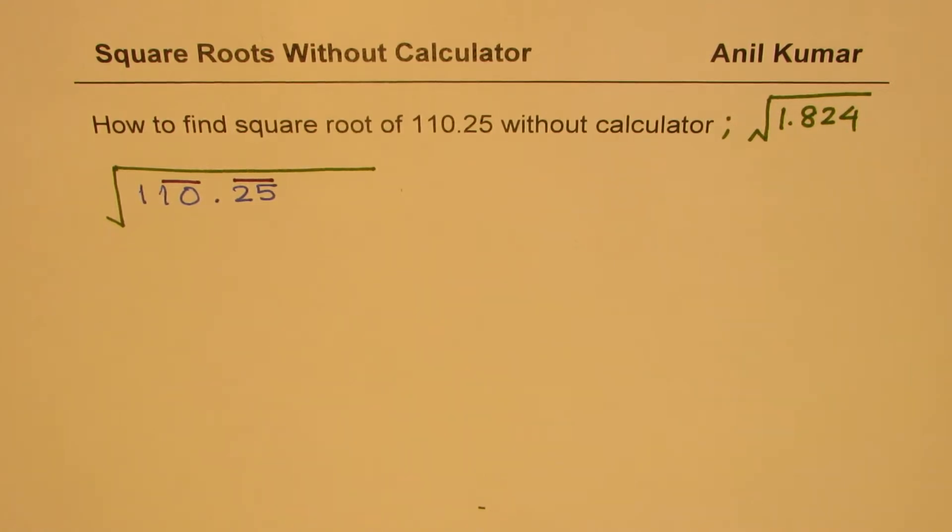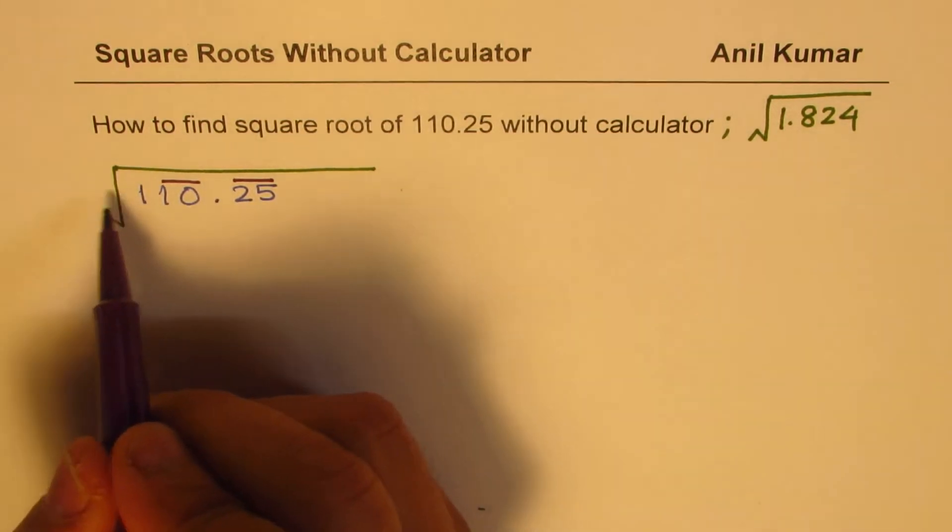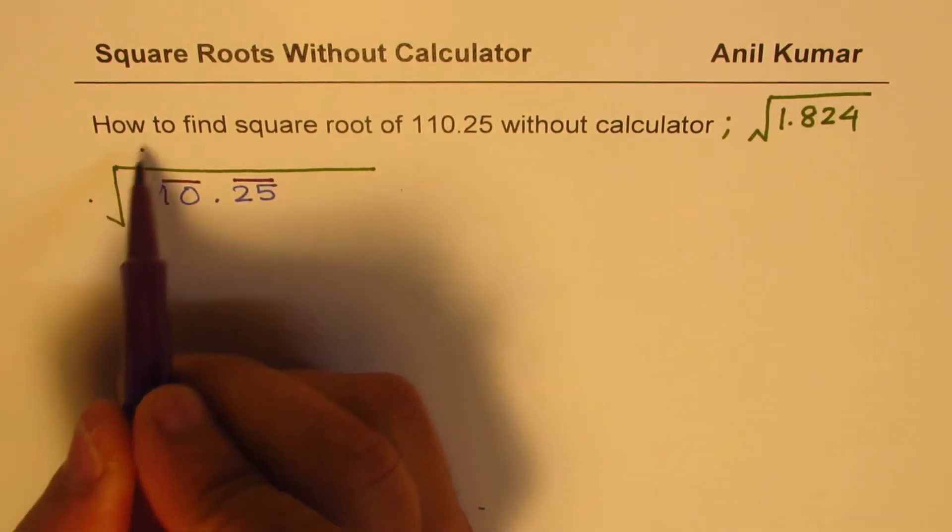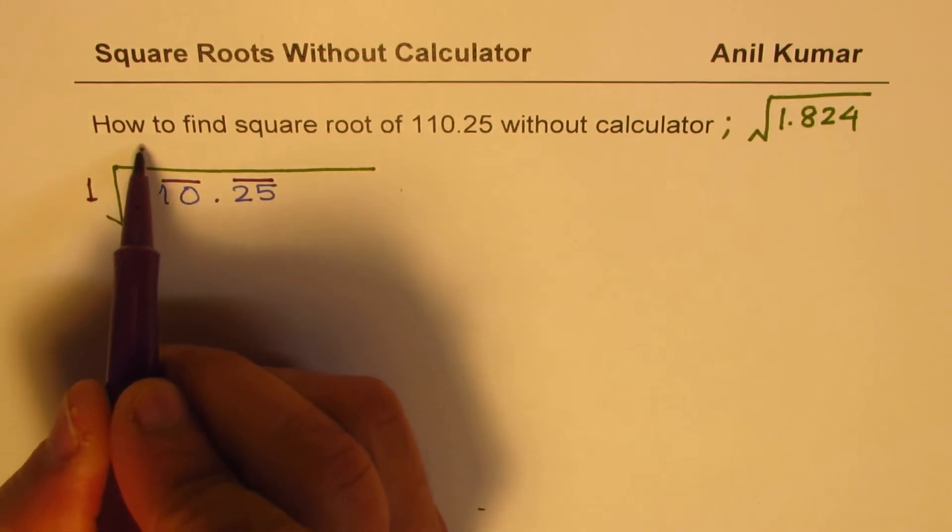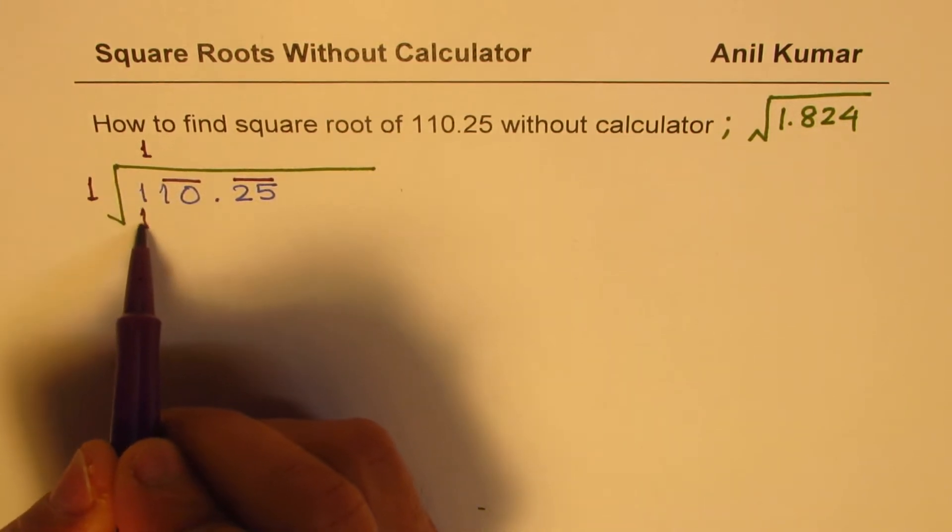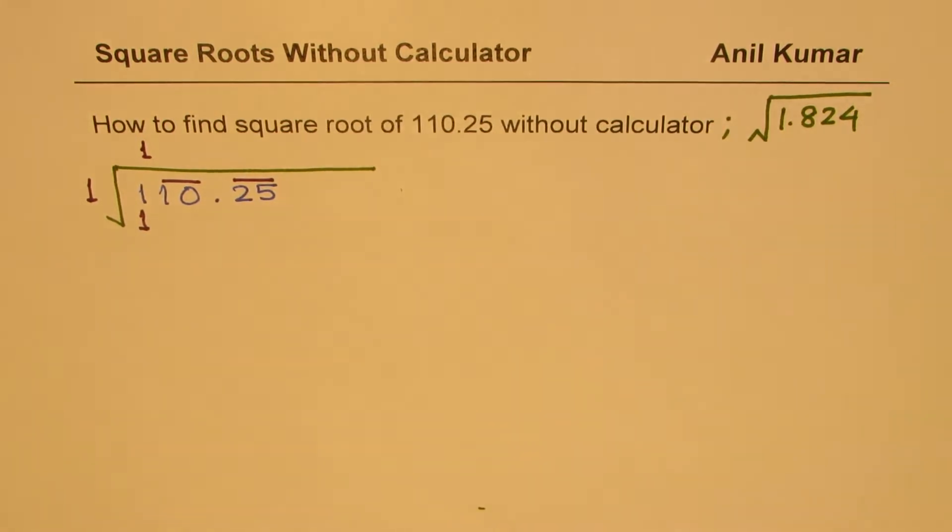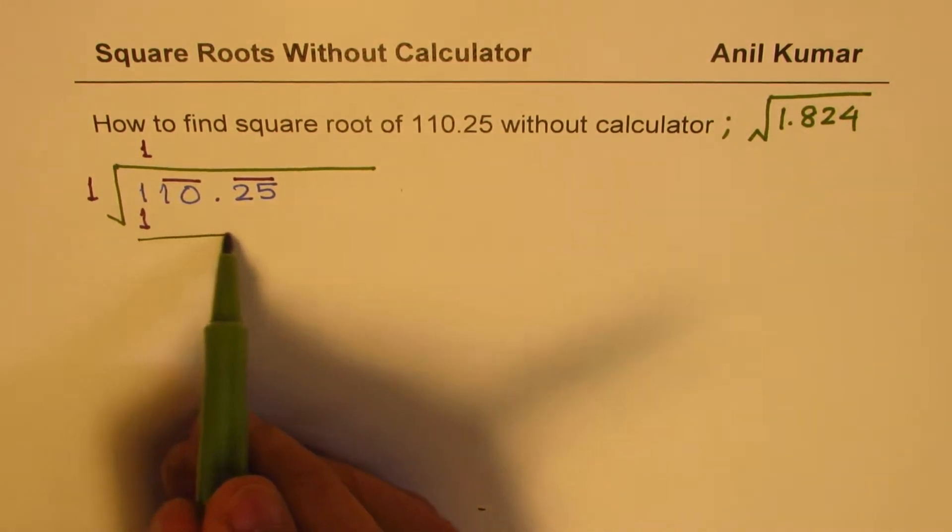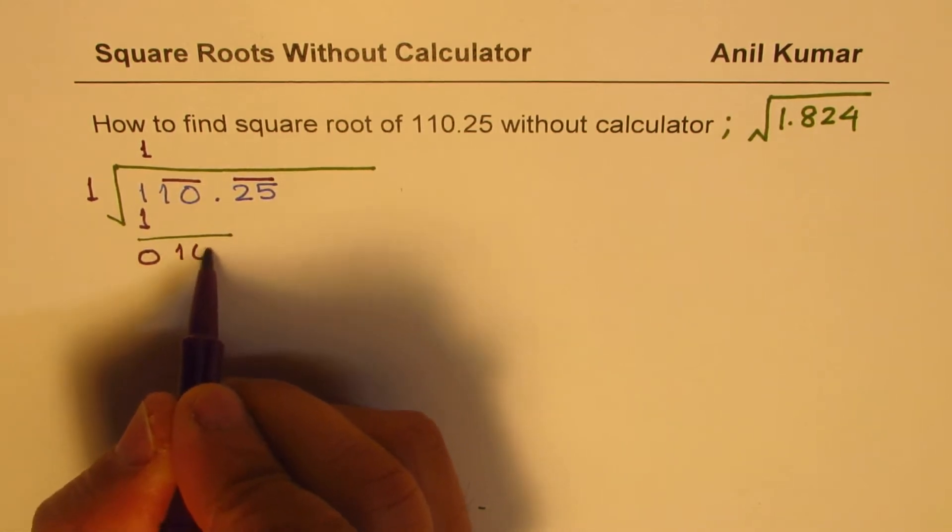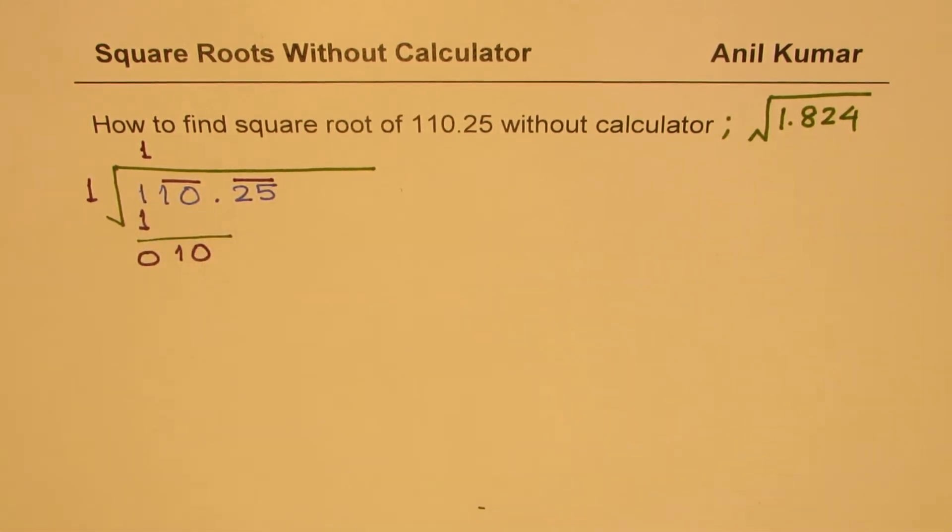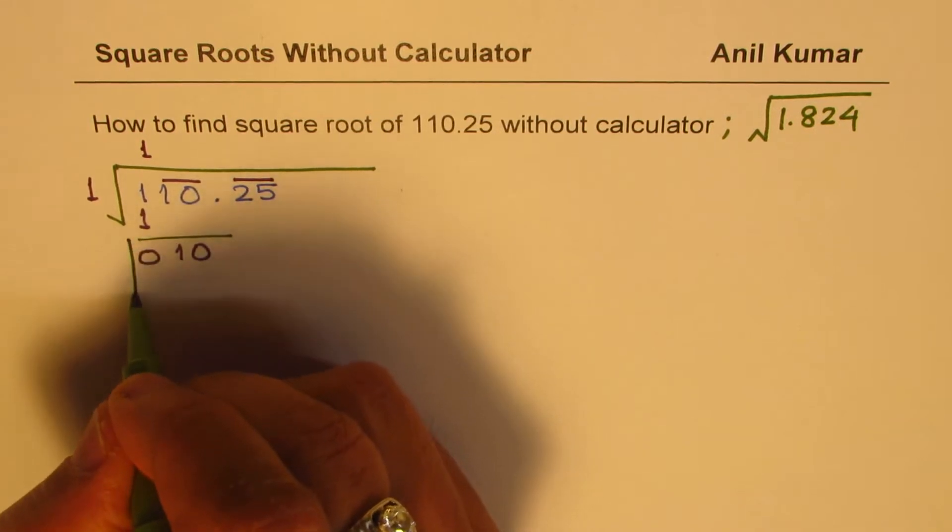So to begin with, we are going to divide the very first number by a number here. It should come both ways. We need product to be 1. So the number could only be 1. So 1 times 1 is 1. And when you take away, you get 0. Then bring down both these numbers, 10.